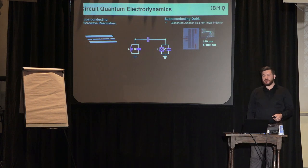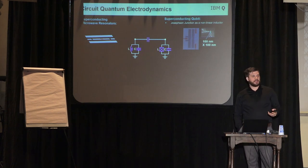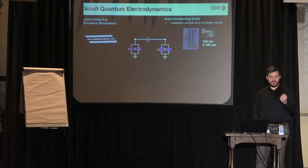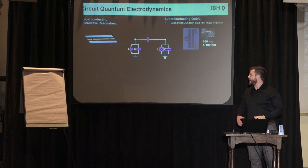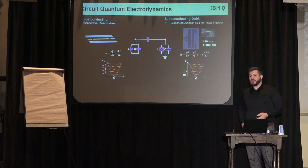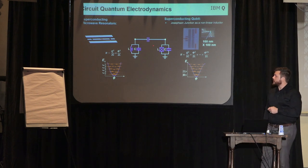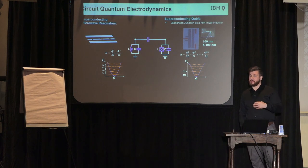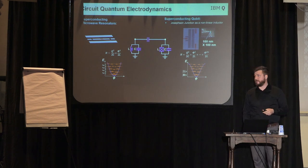IBM uses circuit QED. This is the circuit equivalent of cavity QED, which won the Nobel Prize back in 2012. Whereas in cavity QED you had a physical atom inside some cavity, now instead you're going to have an artificial atom, some superconducting circuit, inside a cavity which is just an LC resonator. IBM specifically uses the fixed frequency transmon qubit, which is a single Josephson junction shunted by a large capacitor. This fixed frequency nature is useful because it actually helps you get much better coherence times than if you have a tunable transmon.